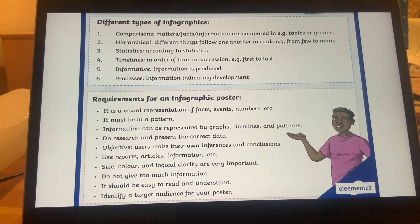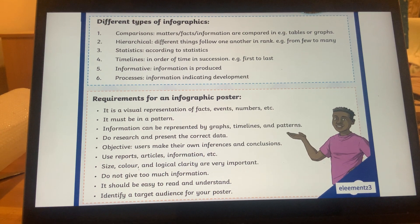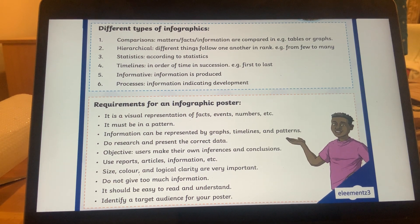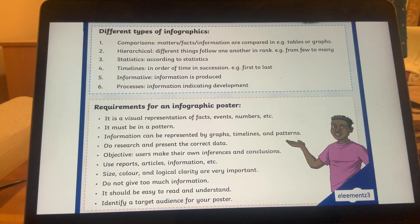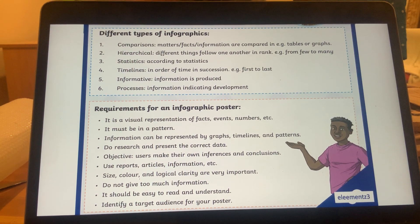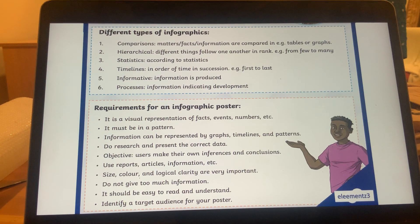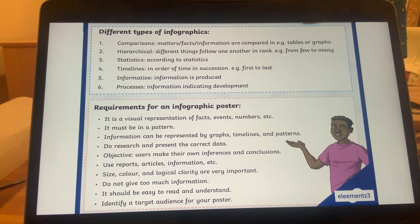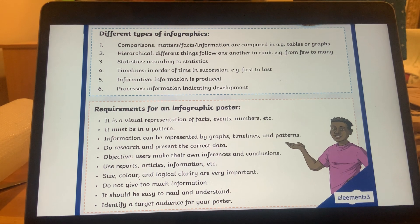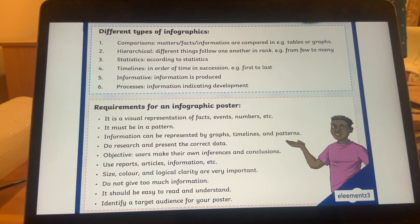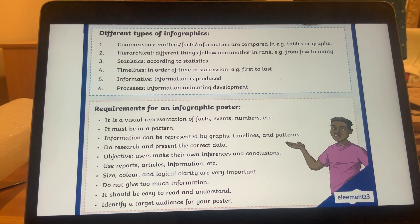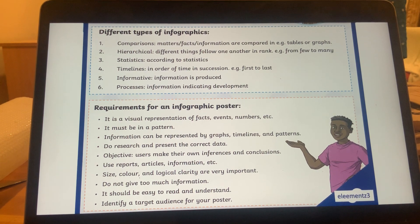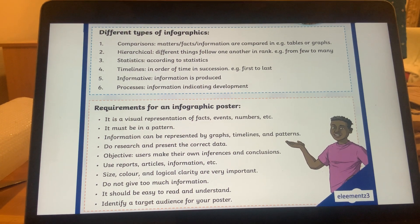For a poster, we require a visual representation of facts, events, and numbers — which means immense research must be conducted. Information can be represented by graphs, timelines, and patterns. Do research and present correct, objective data so users can make their own inferences and conclusions. You'll use reports, articles, and other information. Size, color, and logical clarity are very important — do not give too much information, as it might bore the reader.